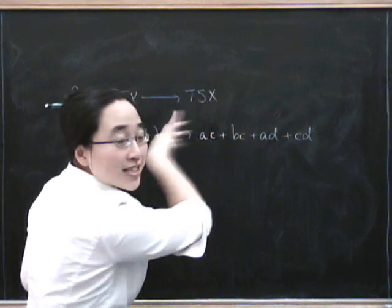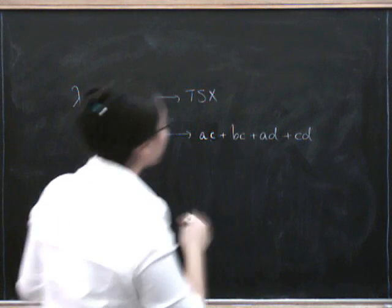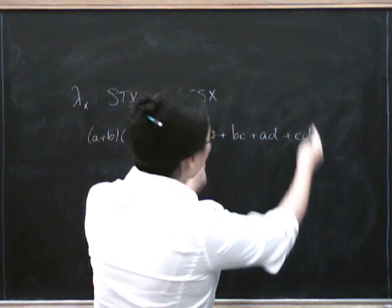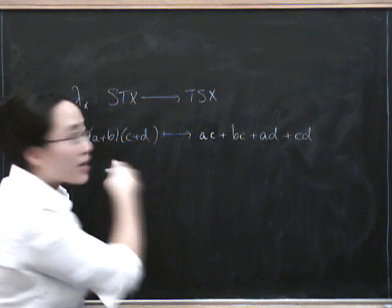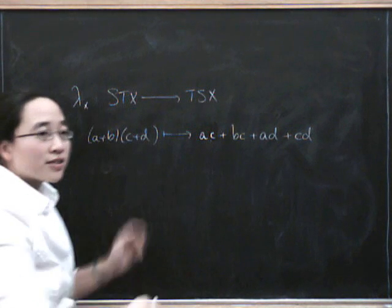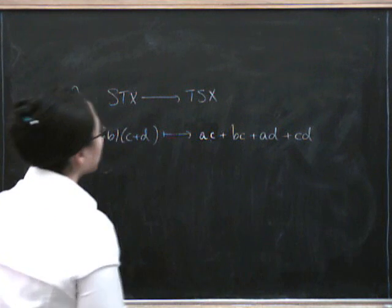And we get a distributive law going in this direction only. There's definitely something directional going on here. You can't take an arbitrary sum of products and necessarily factorize it like this. So we don't have something going this way. This is definitely a non-invertible sort of situation.